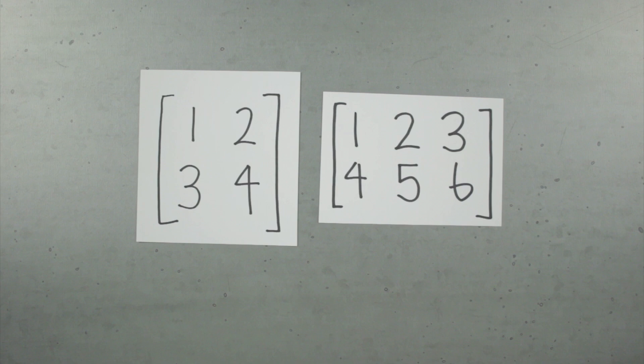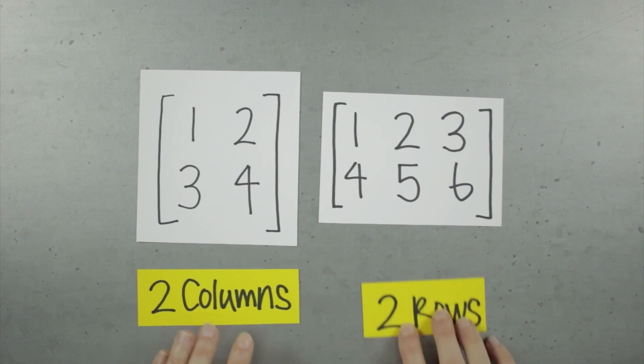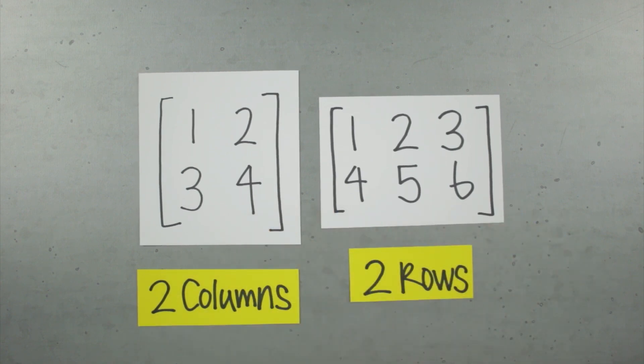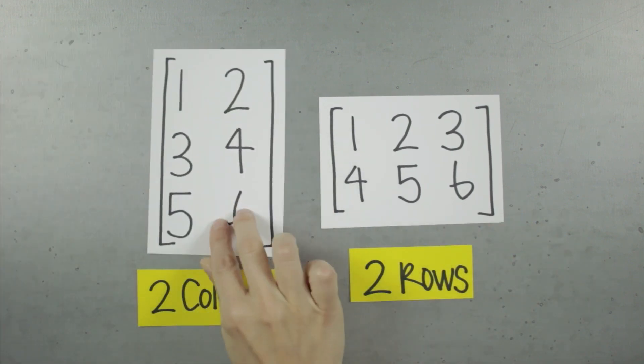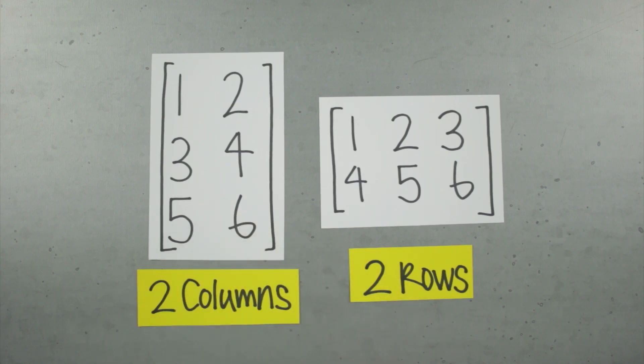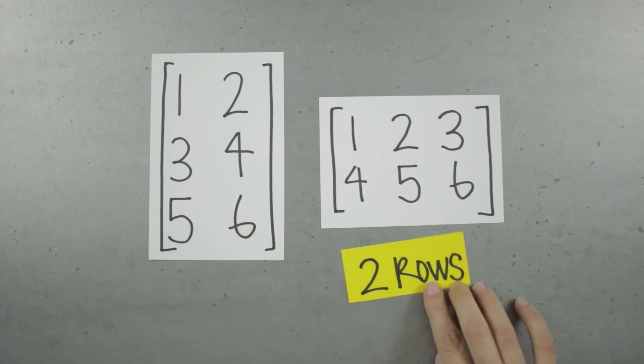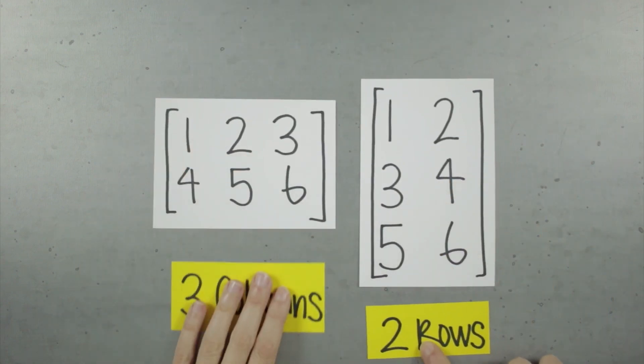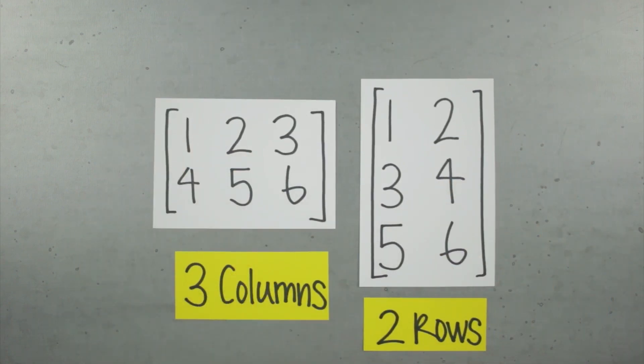I can multiply these together since the first matrix has two columns and the second matrix has two rows. This works too, because I've still got two columns matched up to two rows. But here I have three columns matched up to two rows. Since those don't match, the product of these matrices is undefined and I can't multiply them.